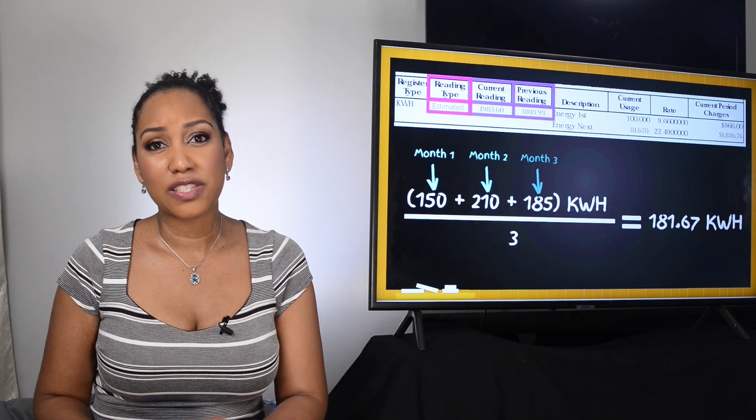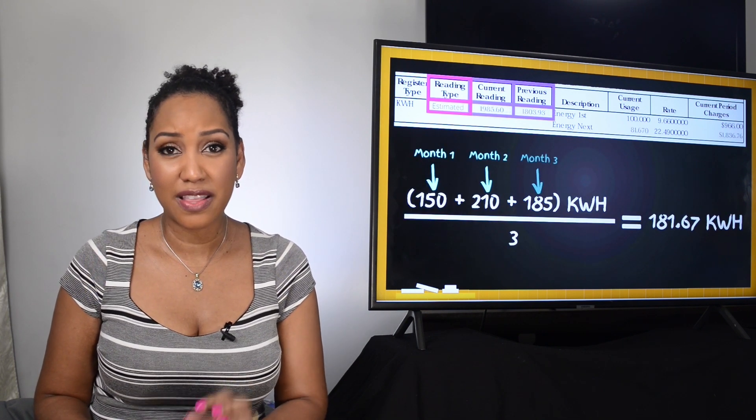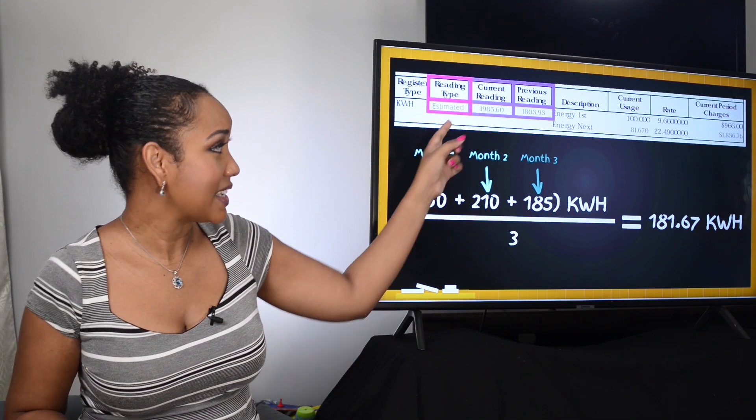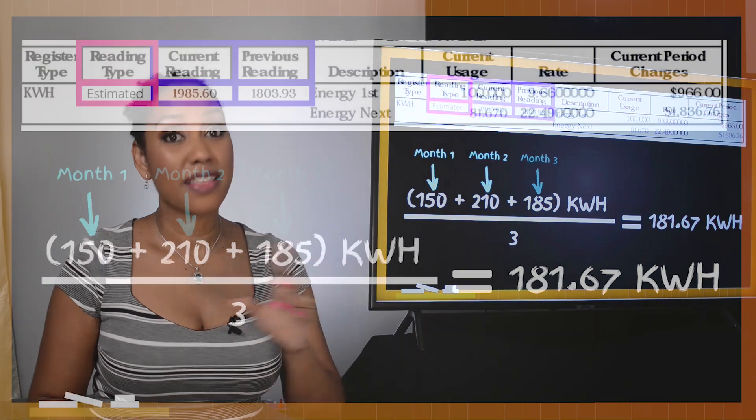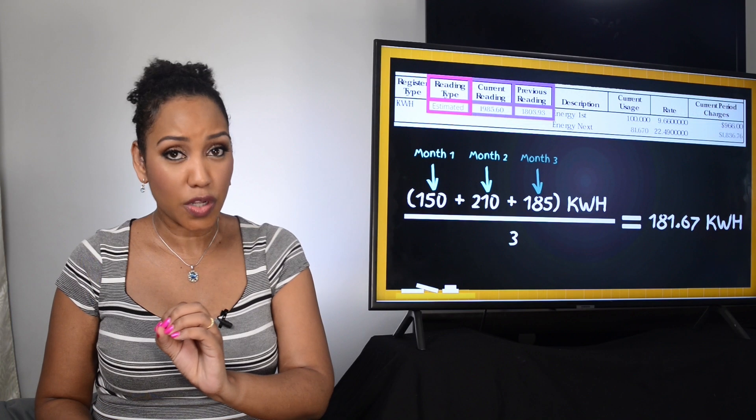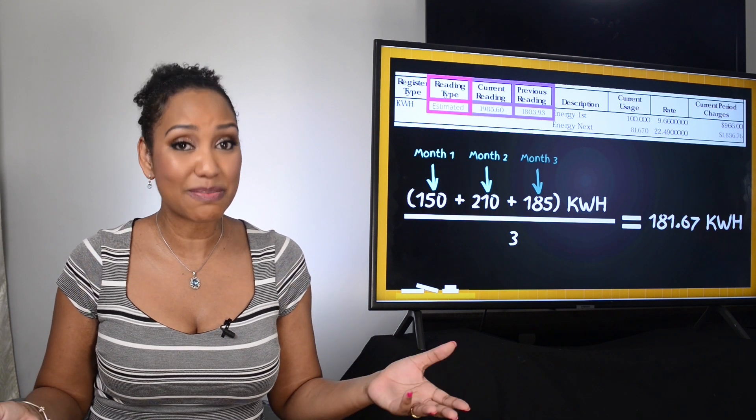In those cases where the meter reader can't get to your meter, then on your light bill in the reading type section you will see estimated. That means that the energy usage for the month is not the actual reading from the meter but you guessed it, an estimate.